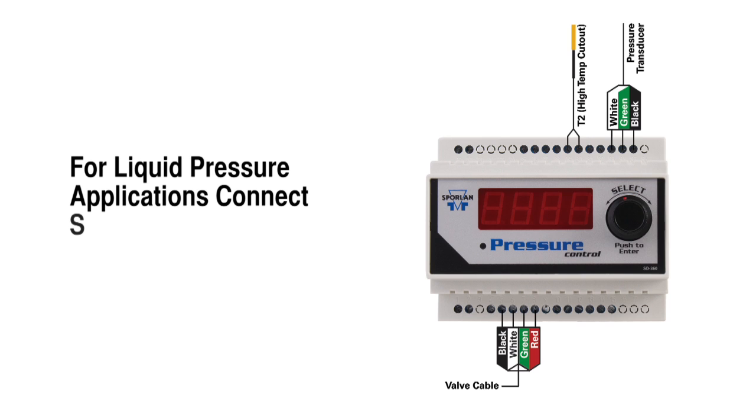For liquid pressure applications, mount the optional liquid outlet temperature sensor to the liquid line feeding the expansion valves. Connect the sensor wires to terminals 29 and 30. This sensor may be used as a high temperature cutout.